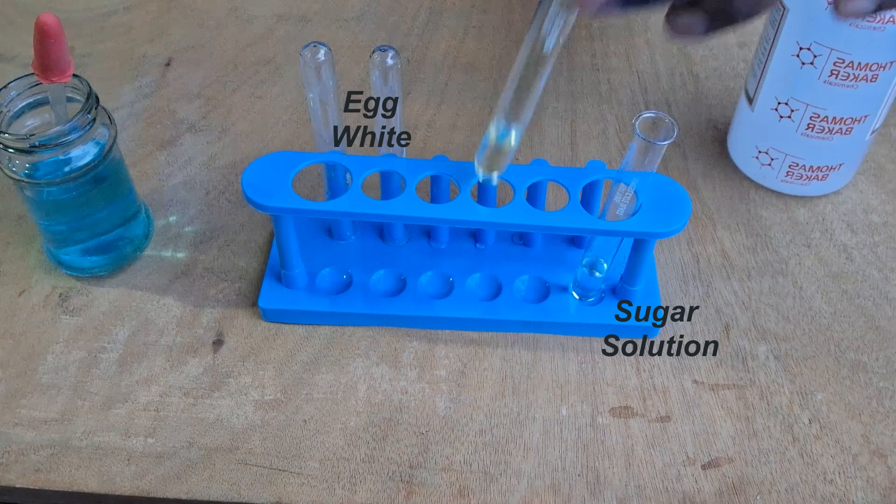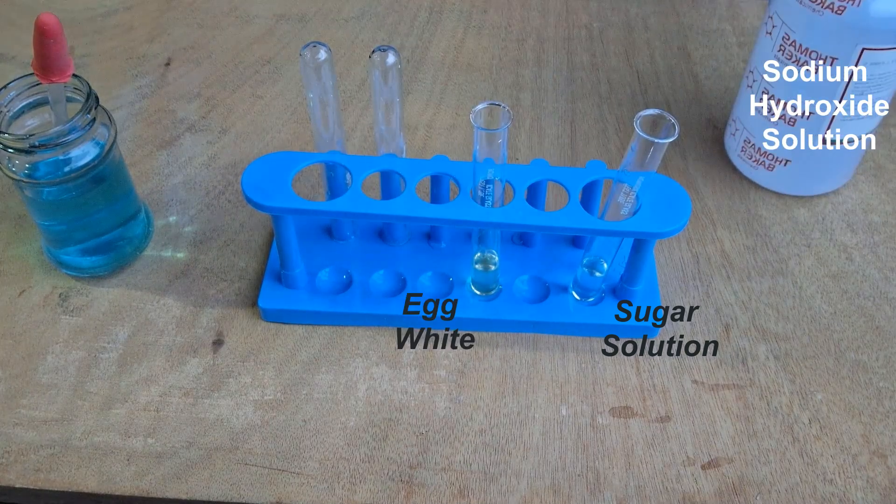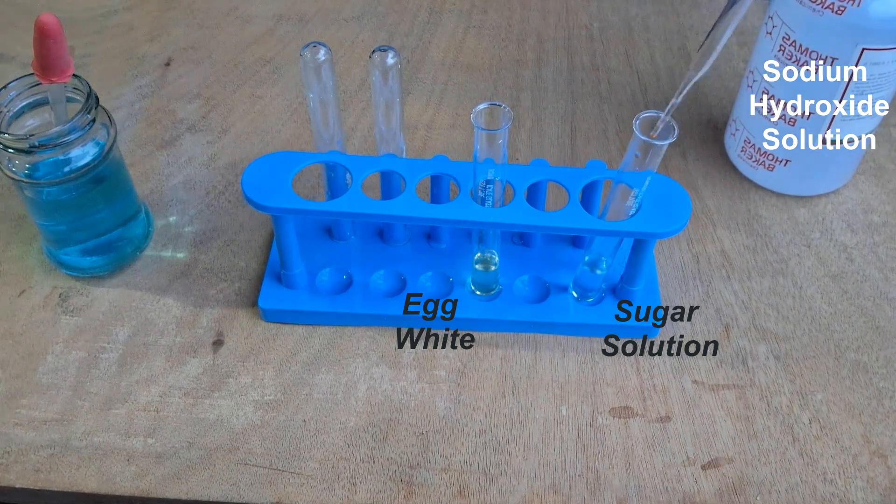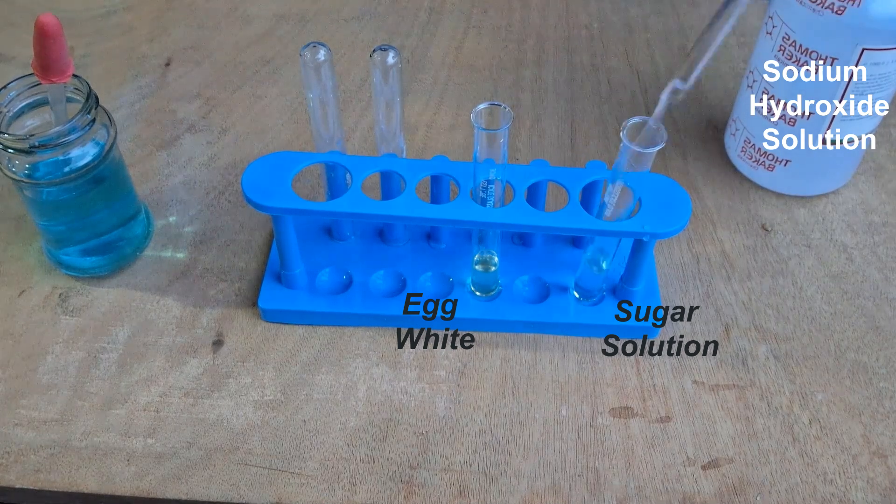That's the egg without the yolk. We take dilute sodium hydroxide solution using a dropper and put a few ml of sodium hydroxide solution in both test tubes.